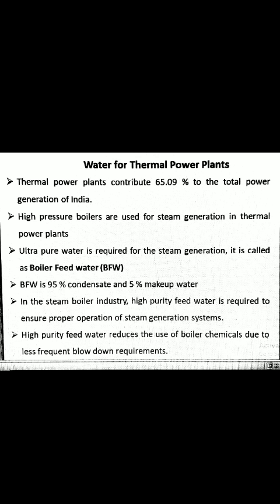The purity requirements for any feed water depend on how much feed water is used as well as what the particular boiler design can tolerate. High purity feed water reduces the use of boiler chemicals due to less frequent blowdown requirements. Lower blowdown frequency also results in lower fuel cost. Scale buildup is reduced due to a smaller concentration of impurities in the boiler feed water. The lower level of impurities also reduces corrosion rates in the boiler. When the boiler is used to run a steam turbine, turbine blade erosion is reduced due to higher purity steam generated.